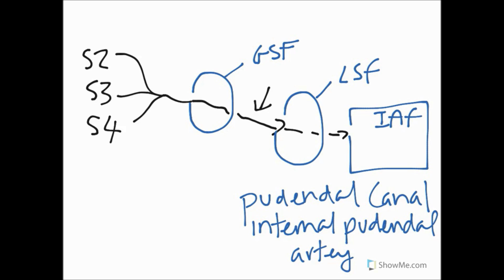And usually we can see the internal pudendal artery in there as well. Okay, so just let's recap. S2, S3, S4 through the greater sciatic foramen briefly or momentarily enters into the gluteal region.